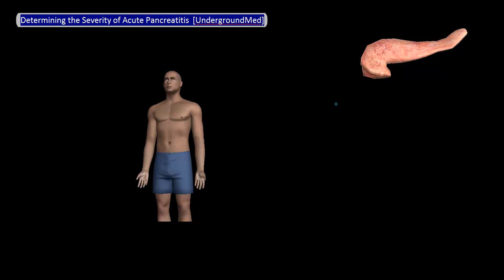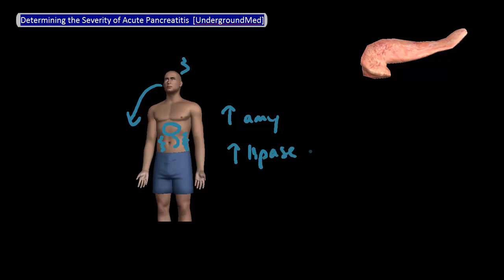Let's say you have a patient who is presenting with epigastric pain, nausea, and vomiting after a night out binge drinking. He's got bluish-gray discoloration around his belly button and flanks, and also has elevated amylase as well as lipase levels. What do you think is going on?